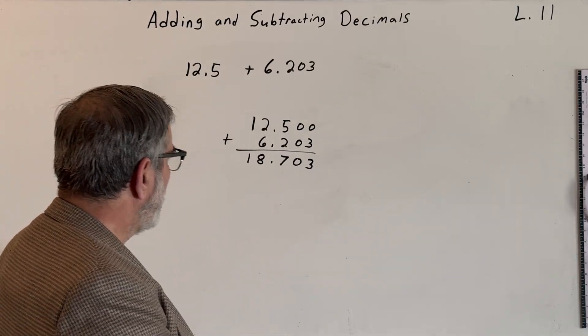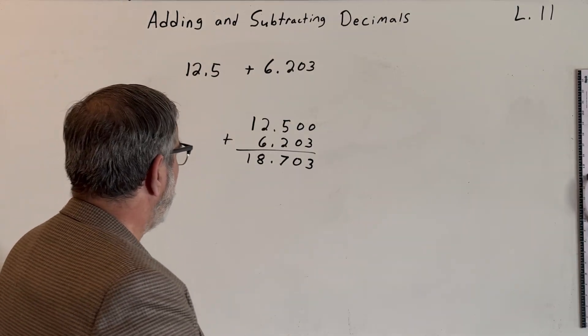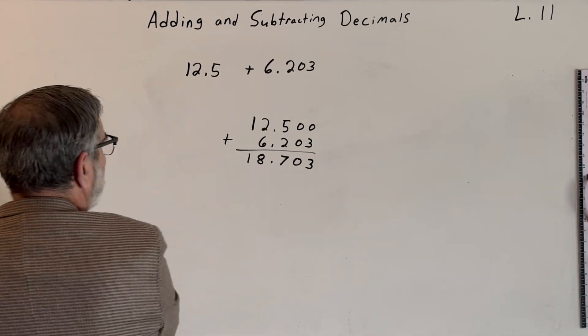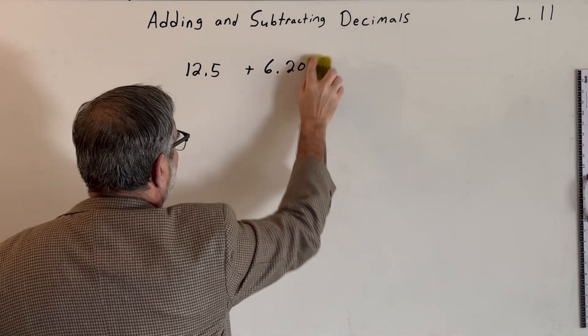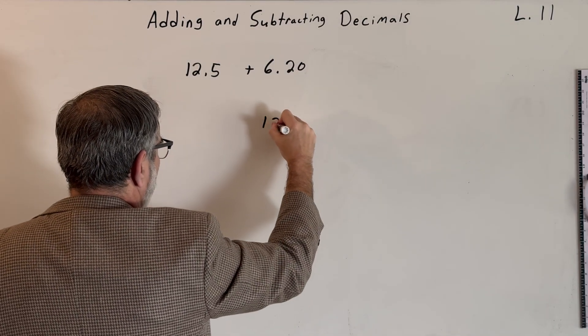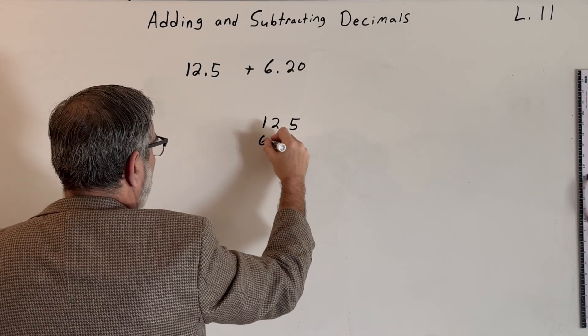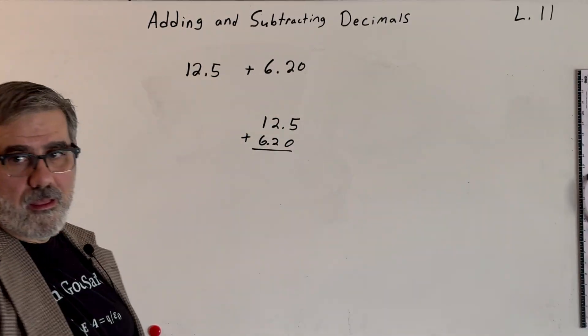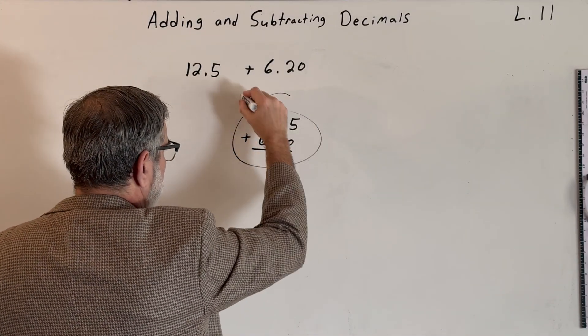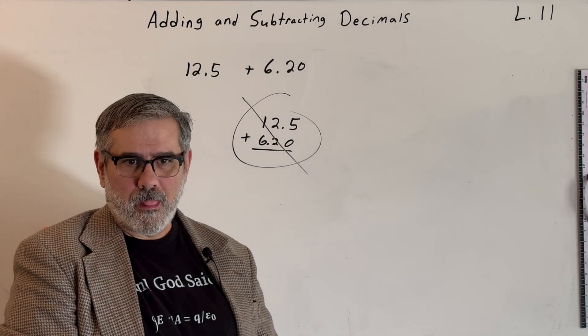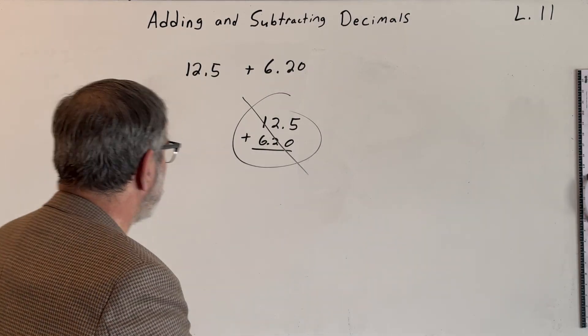Where do people go wrong with this? Sometimes they'll try to line it up, right? In this case, it would not be a problem so much. But what if it was something like this? 6.20 and 12.5, they might try to do this. You see that? Try to line the numbers up. But this is no, right? This violated our rule about aligning the decimal points, right? So make sure you align those decimal points when setting these problems up.